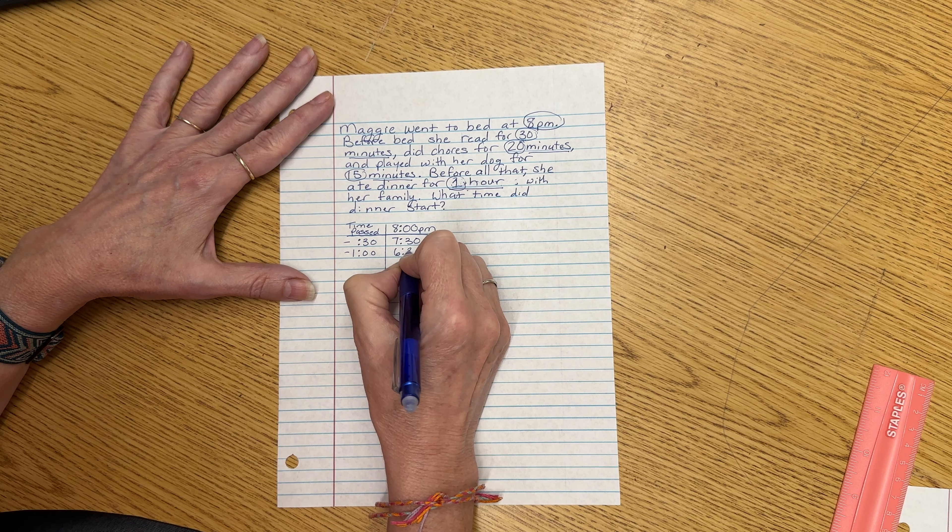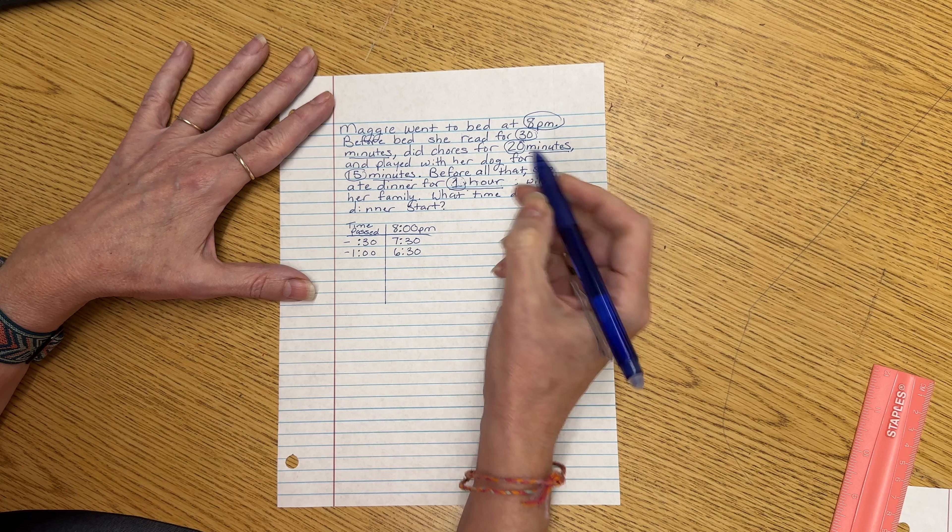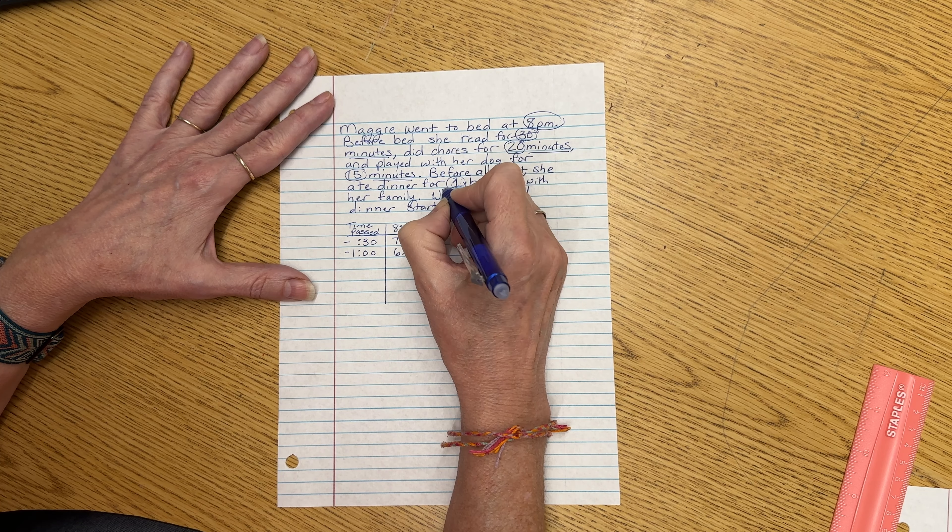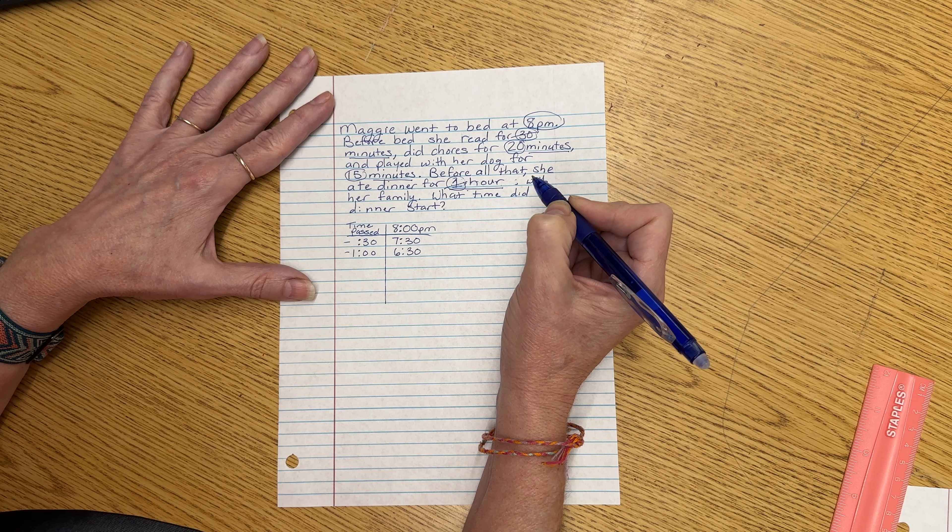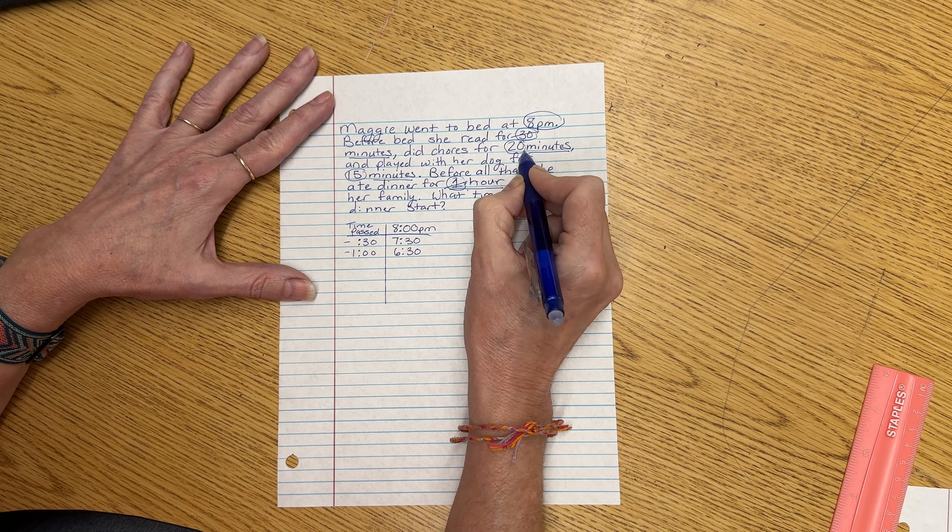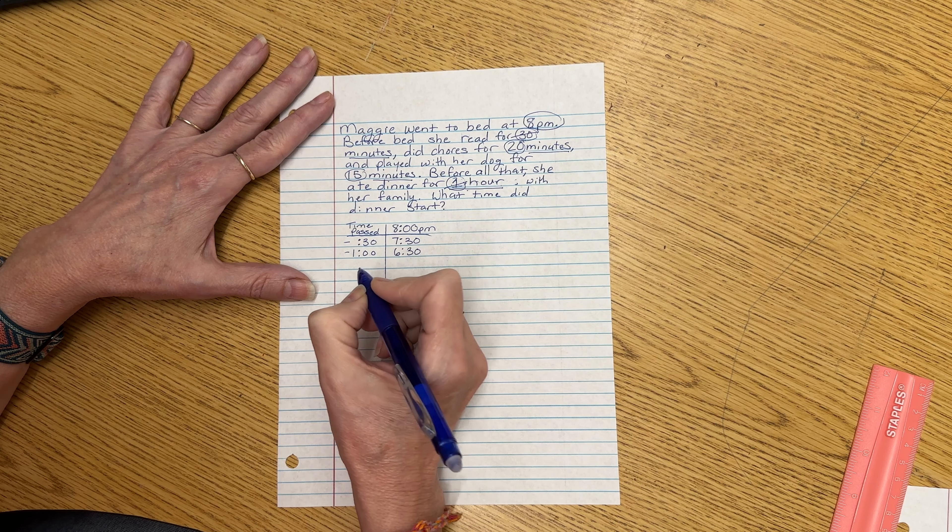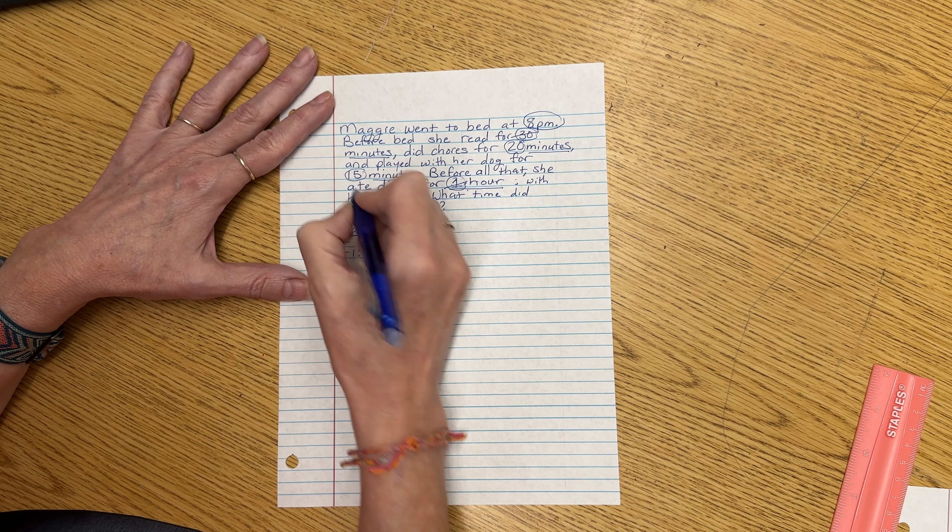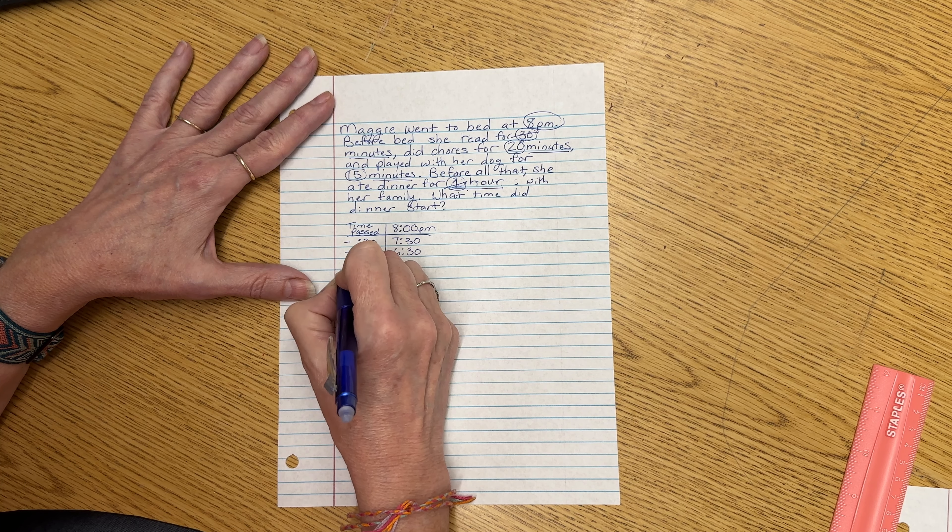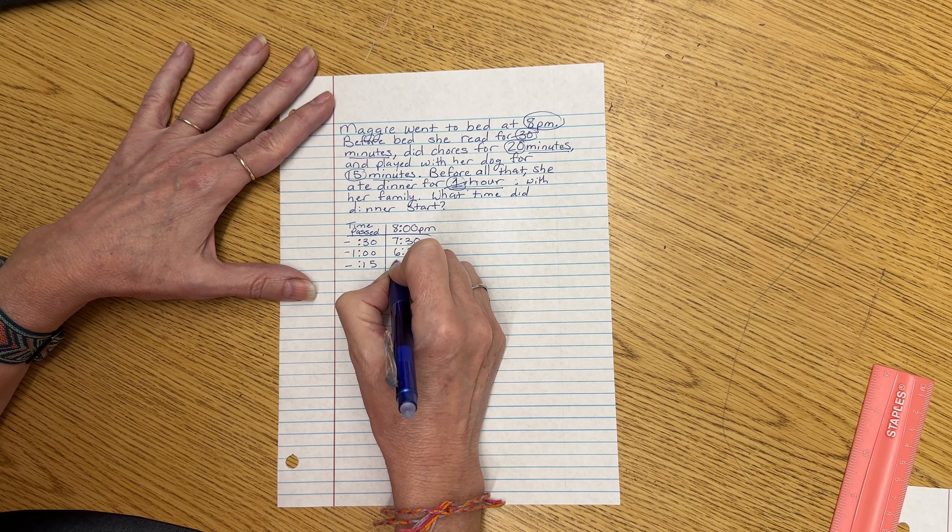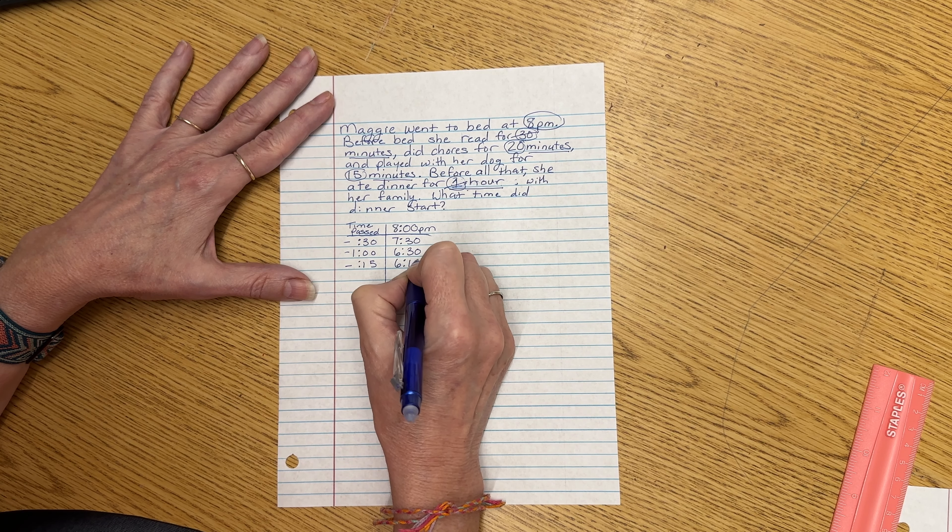Because that would be easier than subtracting the 20 minutes and the 15 minutes. So we've got our 30 minutes out of the way. We've got our one hour out of the way. Now we have 15 minutes and 20 minutes left. I'm going to go ahead and take that 15 minutes out, subtracting 15 to get me to 6:15.